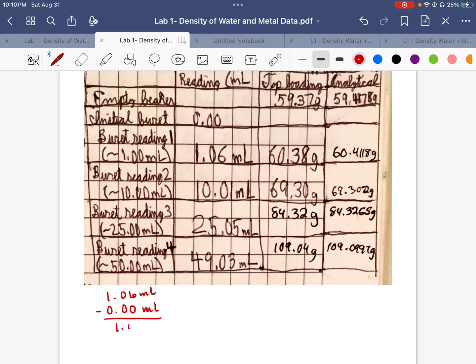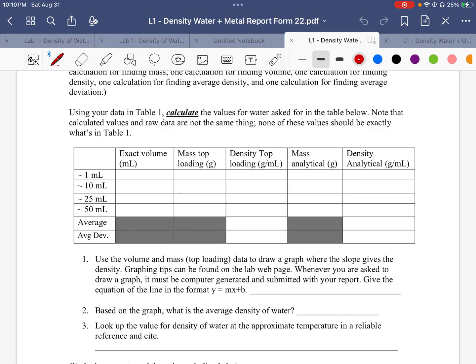And that means that that first value happens to be the same. So I would plug in that 1.06 into here. And I also have the correct sig figs. You should have 2 to the right of the decimal for volumes.